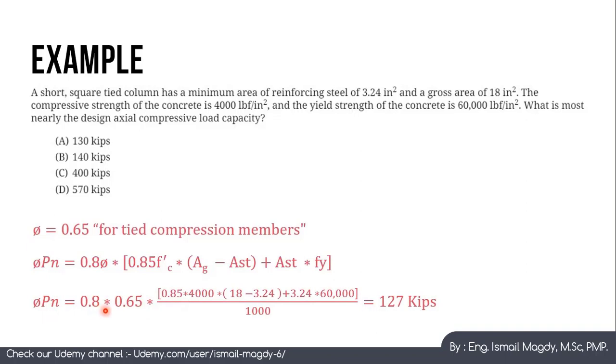So Phi Pn equals 0.8 multiplied by 0.65 multiplied by 0.85 multiplied by 4000 multiplied by 18 minus 3.24, which is the area gross minus area steel, plus 3.24 multiplied by 60,000. All of this is going to be divided by 1000 because instead of psi we want it to be per kips, which is 1000 of a pound, because here all of the choices are per kips. So solving this equation you find that Phi Pn equals 127 kips. So the closest answer is the first option which is 130 kips.